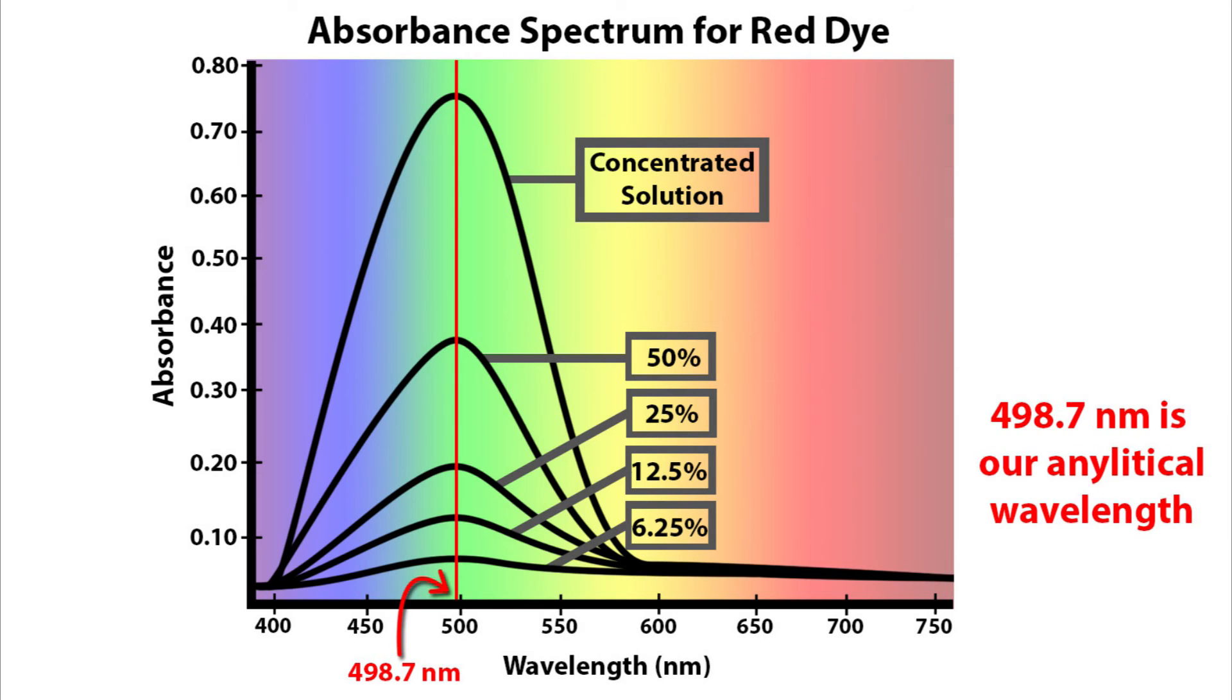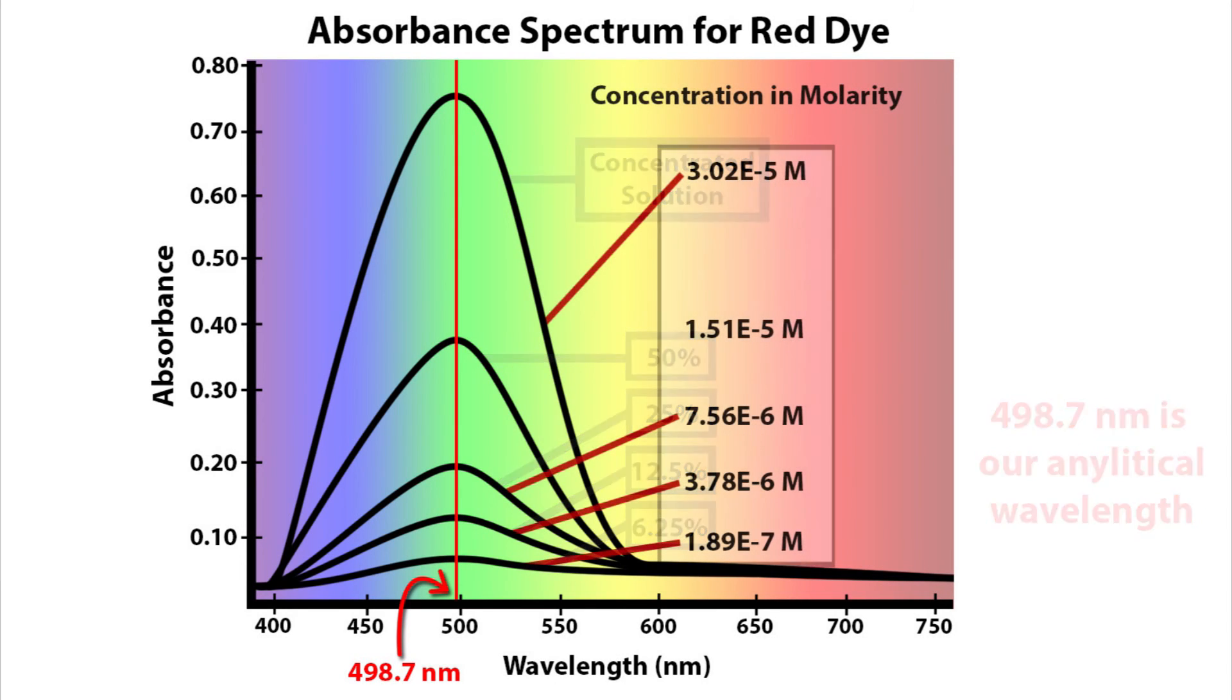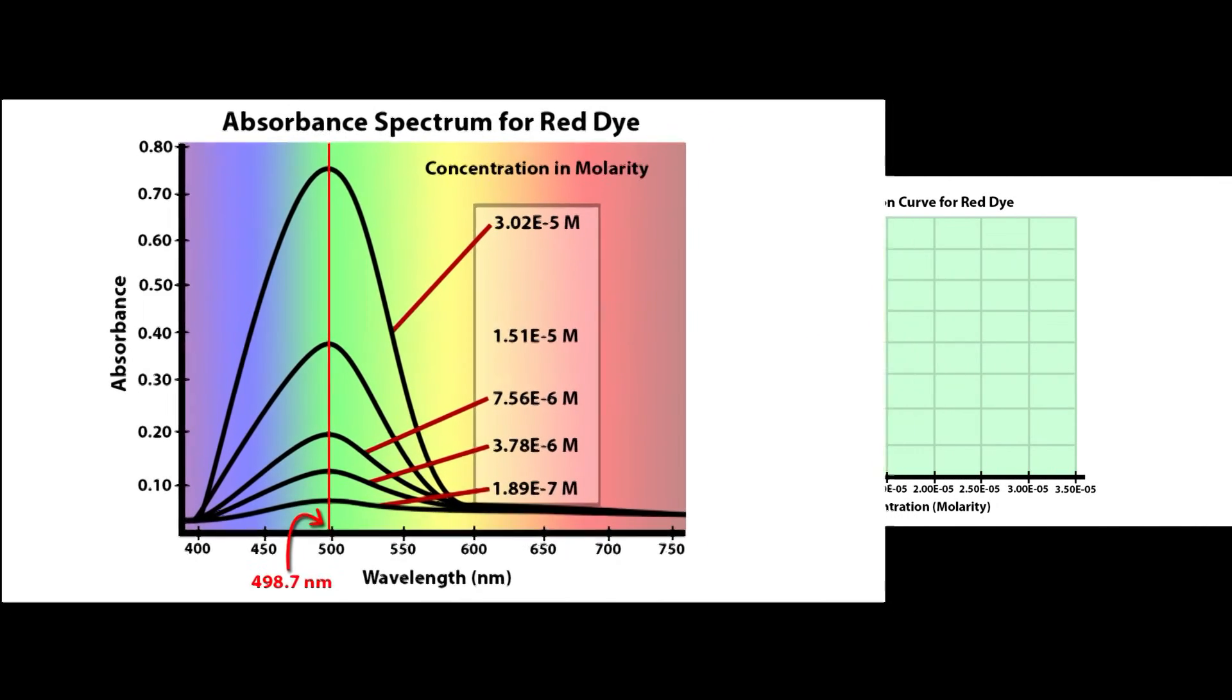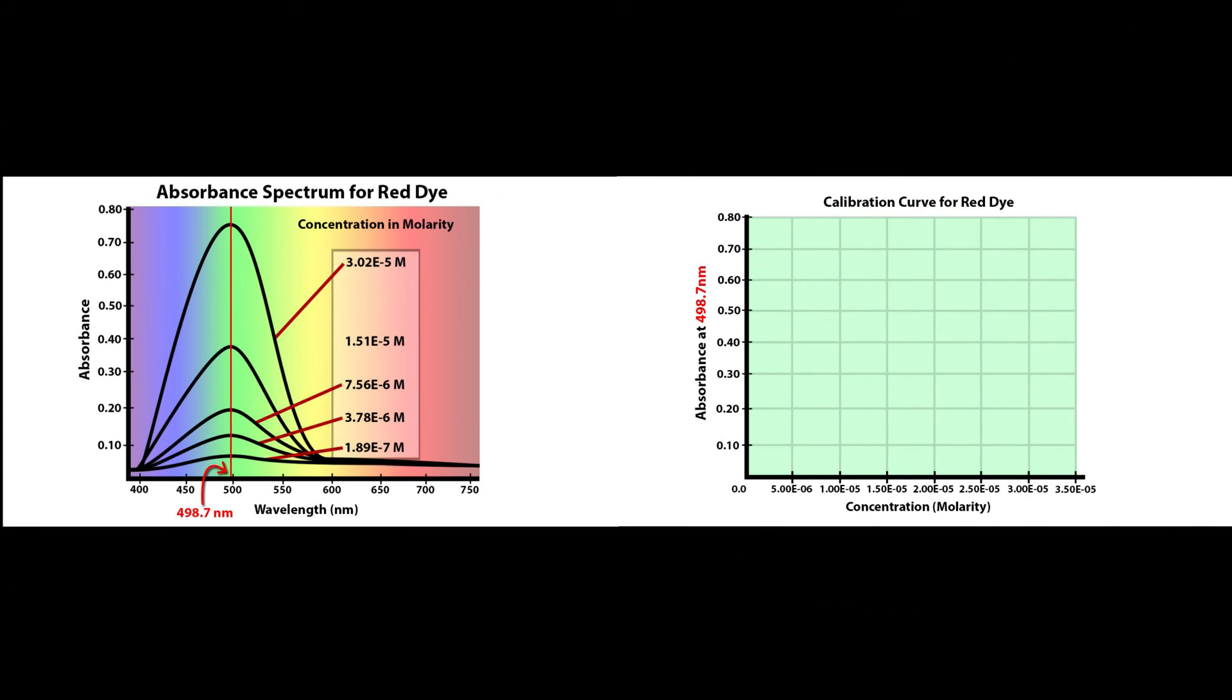Each one is about half the absorbance of the previous sample. This makes sense because we diluted each one by 50%. From this data, you will need to make a calibration curve.